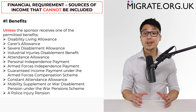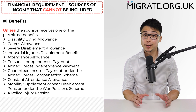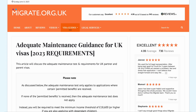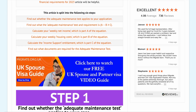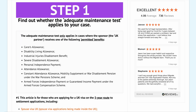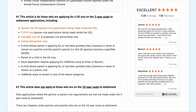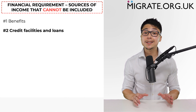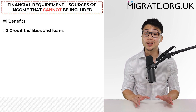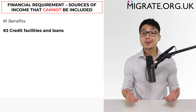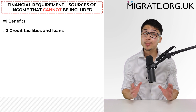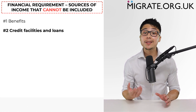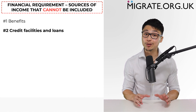Importantly, the minimum income threshold of £18,600 — higher if dependent children are applying — will not apply. We have written a rather comprehensive guide on the adequate maintenance test on our website, migrate.org.uk, so if the sponsor does receive one of these benefits, you may decide to give that a read. Two: credit card facilities and loans cannot be included towards the financial requirement. So the immigration rules make it clear that you cannot borrow £62,500 from a lender and then rely on that as cash savings to satisfy the financial requirement.